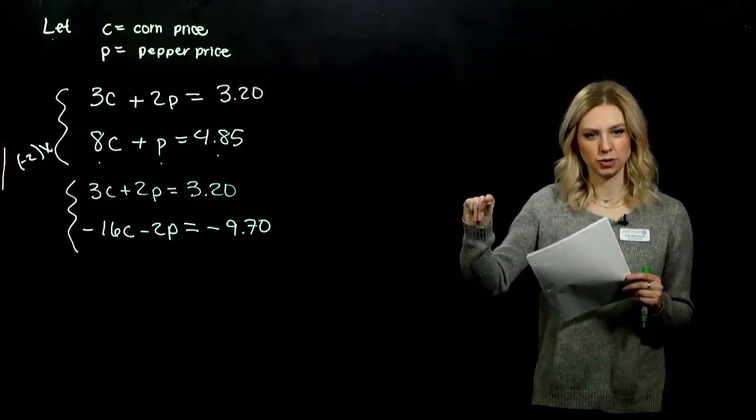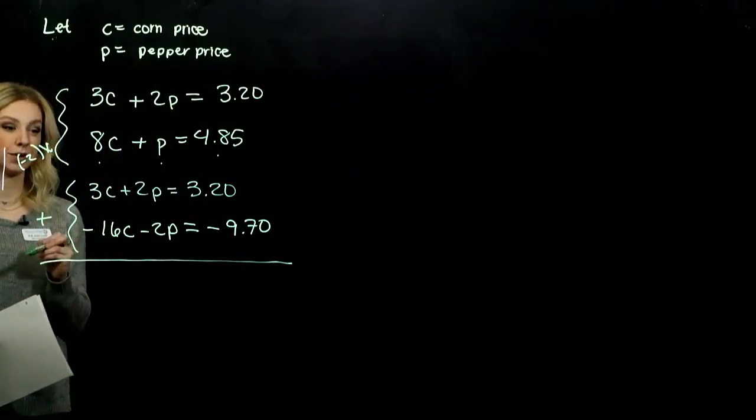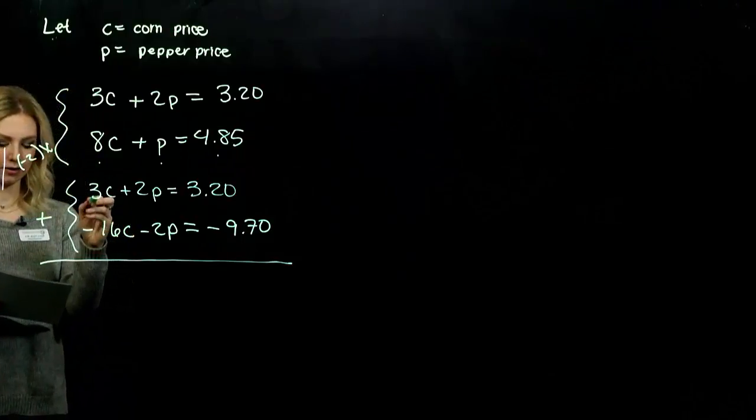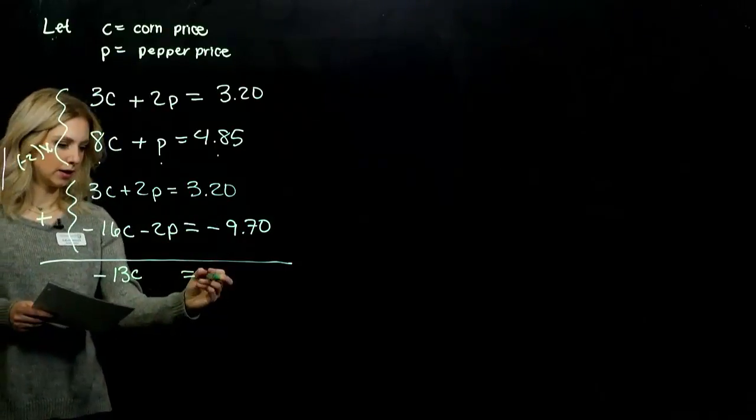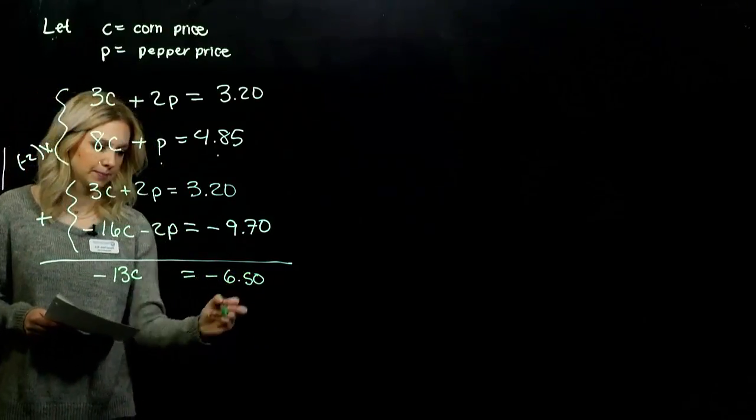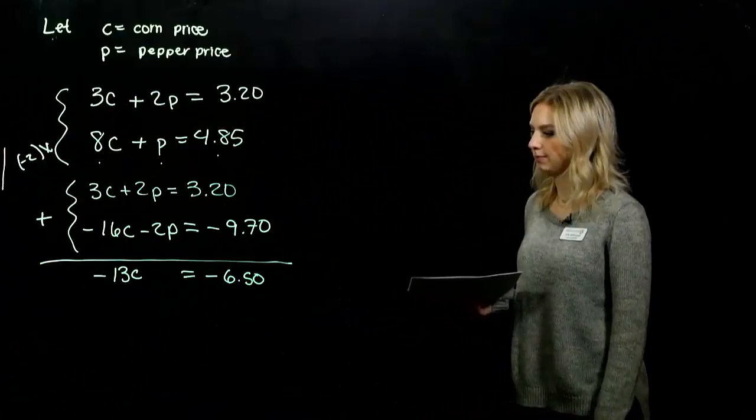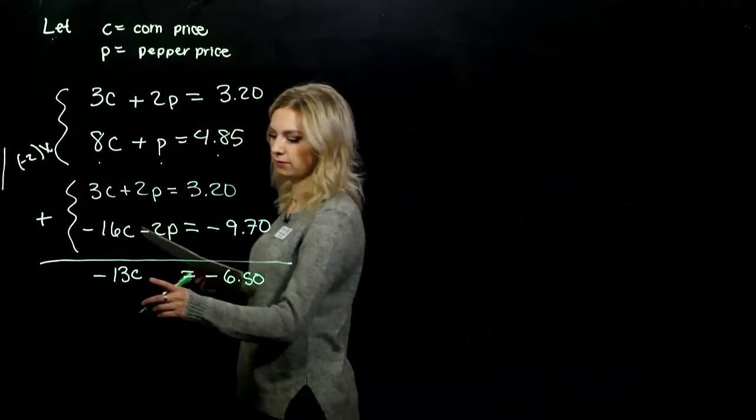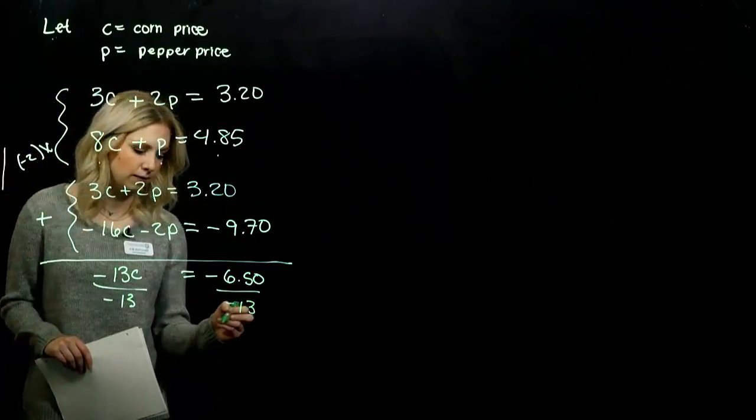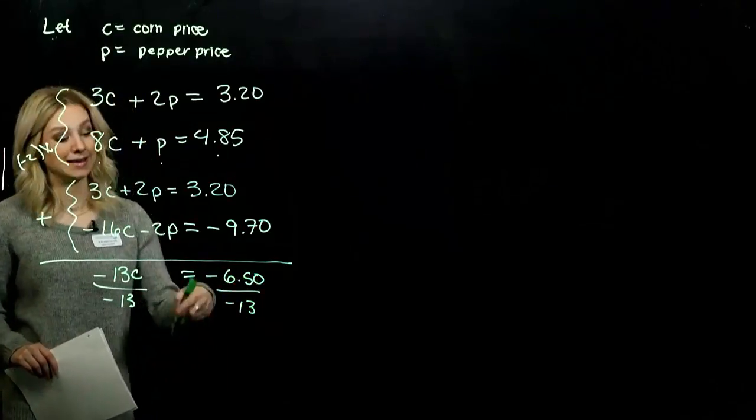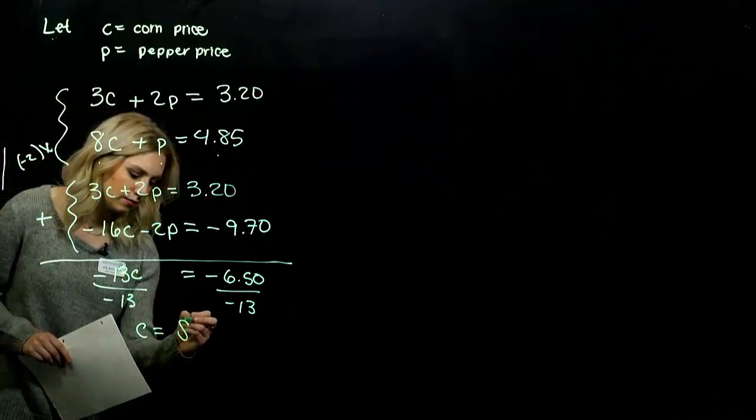Now when we add those two lines together, what's going to happen? P's are going to be gone. We'll have an equation in one variable. I've got negative 16 and I add 3 to that, negative 13C. P's are gone. When we add these together, we're looking at negative 6.50. So when we go ahead and do the division, we've got -6.50 divided by -13. If we actually do that division, we're looking at 50 cents.